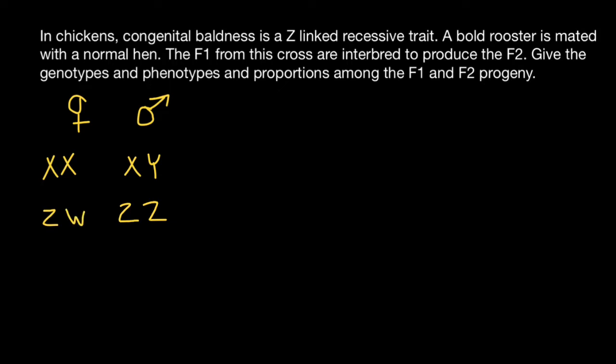Let's specify the defective Z chromosome with a different color, for example red. According to our problem, the rooster has the following genotype: two defective Z chromosomes. The hen has a normal phenotype, which means her genotype is Z and W, normal chromosomes.